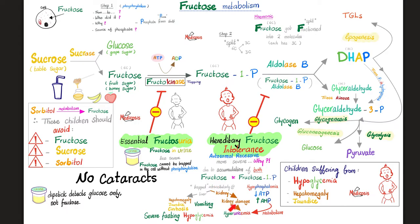Accumulation of fructose-1-phosphate in the kidneys causes kidney damage, which impairs uric acid excretion, leading to hyperuricemia. Additionally, all the phosphate is trapped inside cells as fructose-1-phosphate, leaving less phosphate available to make ATP — resulting in low ATP, high AMP, fatigue, drowsiness, dizziness, and hypophosphatemia.